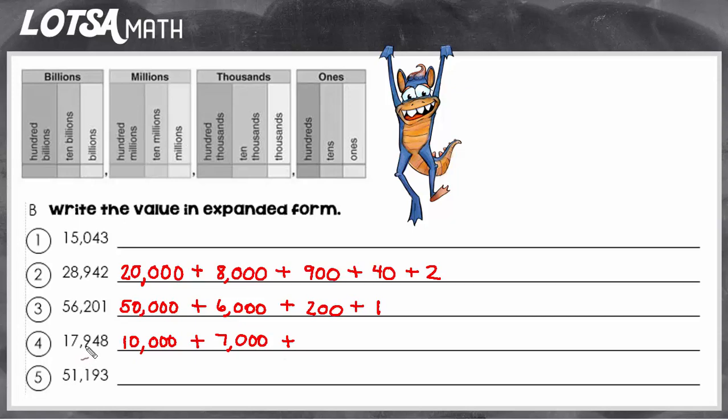Now we have a 9 in the hundreds place. So 9 hundreds has a value of 900. Now we have a 4 in the tens place. So that value is going to be 40. And finally, we have an 8 in the ones place. So that value is just going to be 8.